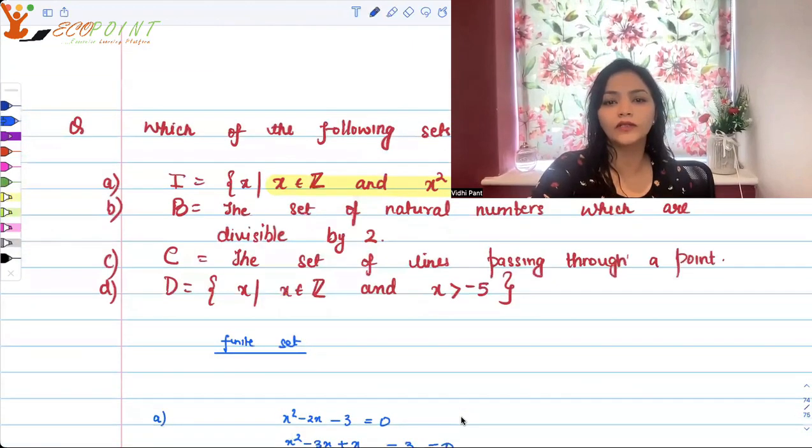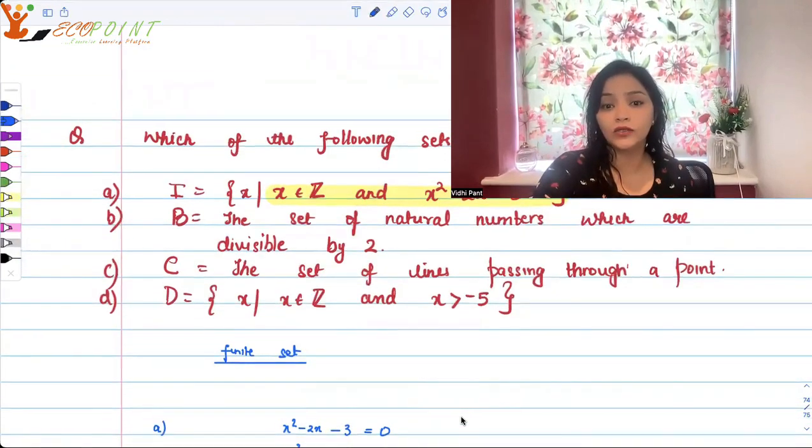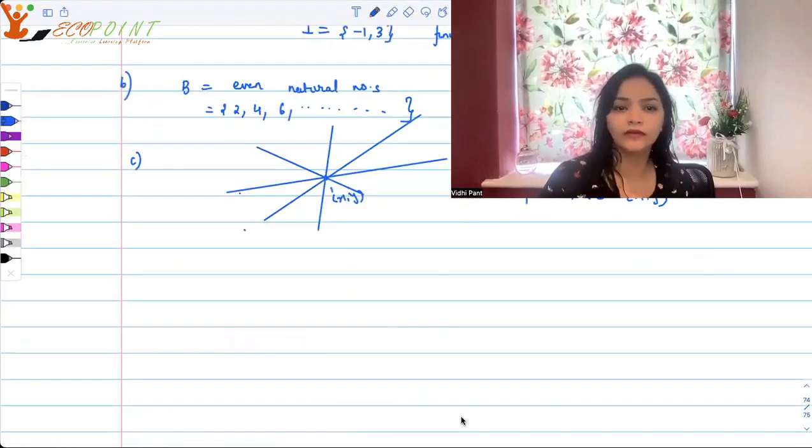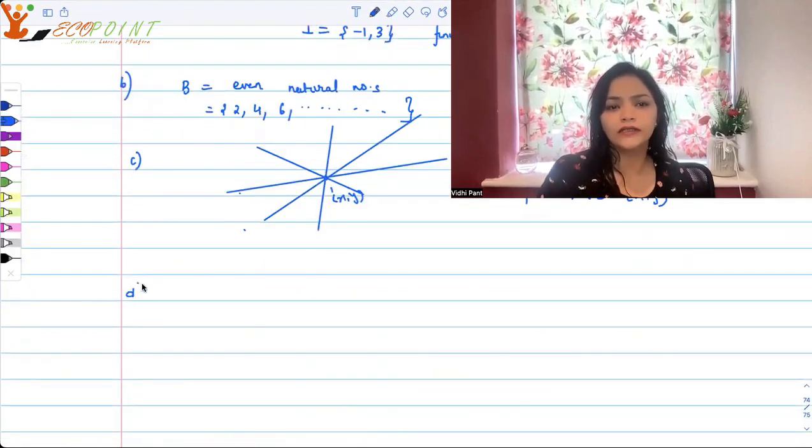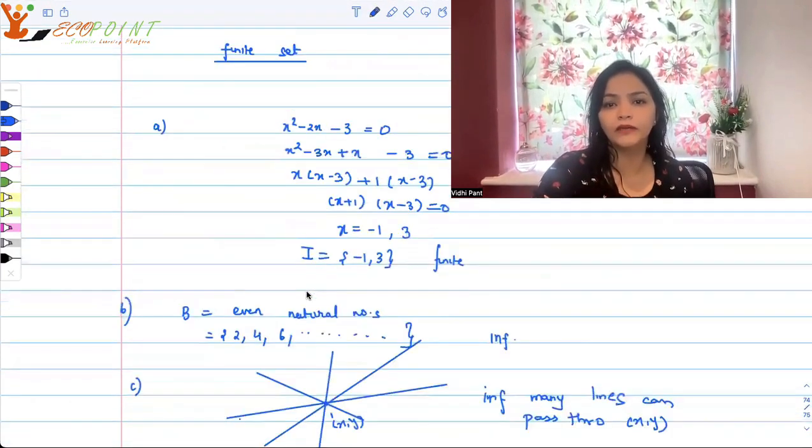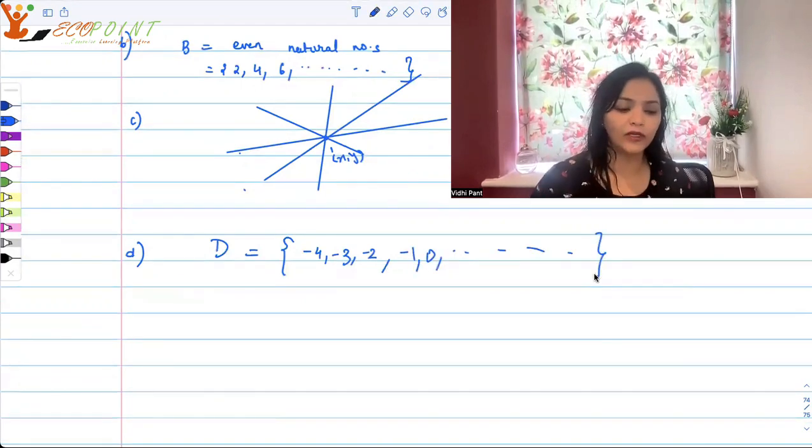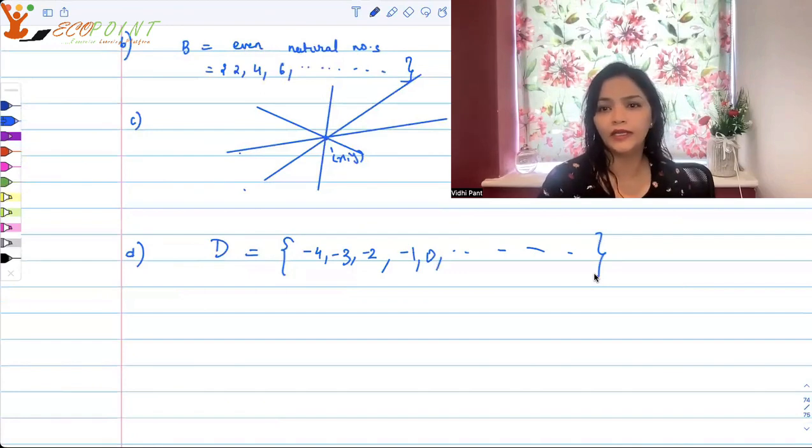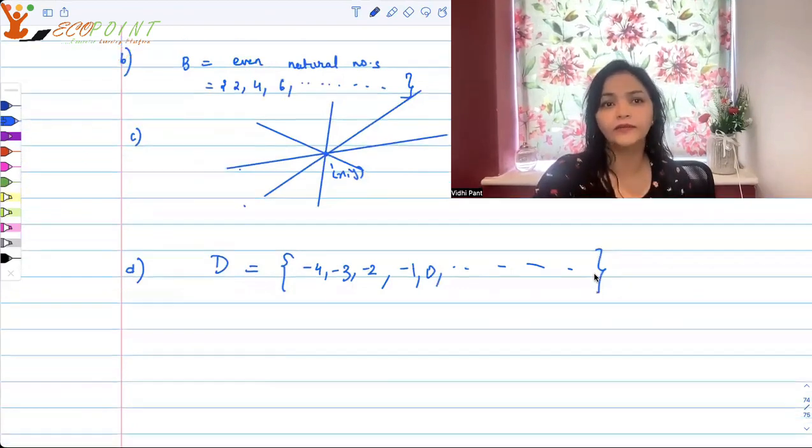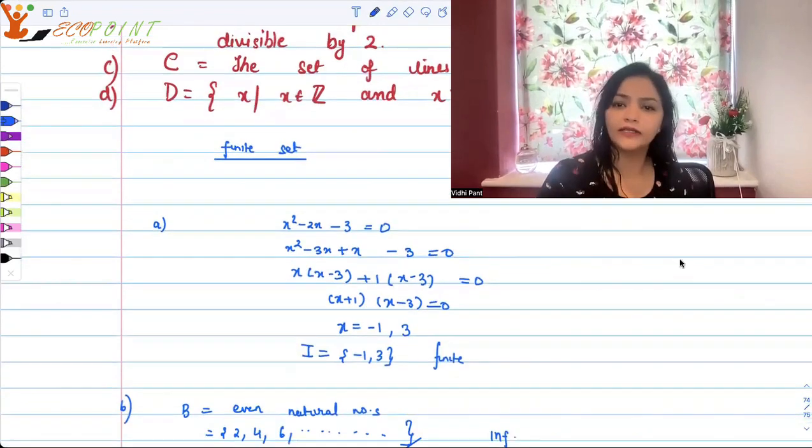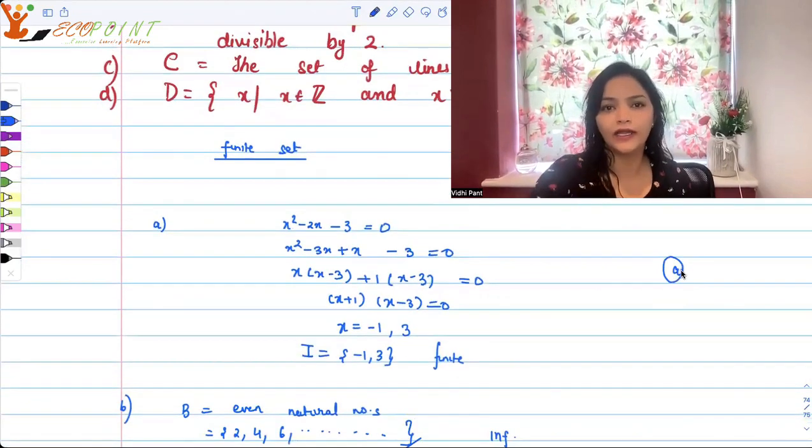D is the set of all natural numbers, set of all integers, sorry, greater than minus 5. So the set D is the set of all, strictly greater than minus 5. So it is minus 4, minus 3, minus 2, minus 1, 0, so on and so forth. It will keep on going. It's infinitely many number of points in there. So infinite set. So the correct answer is, of course, A, which is a finite set.